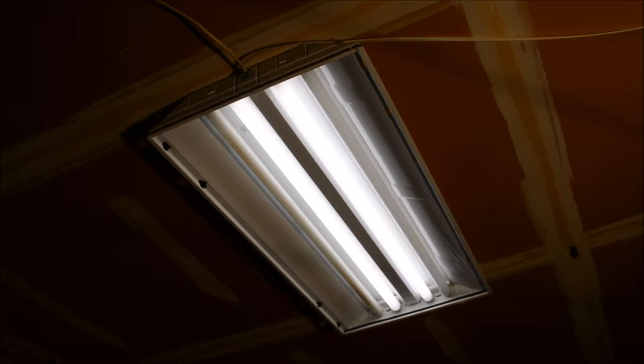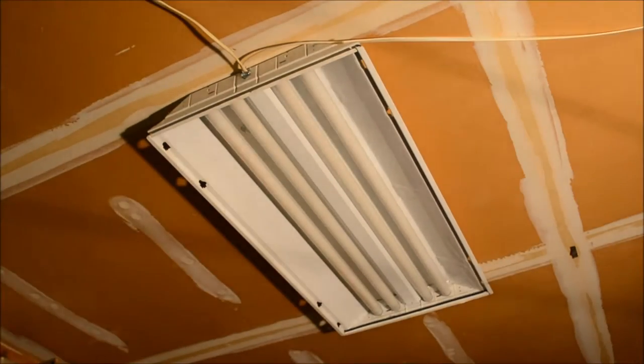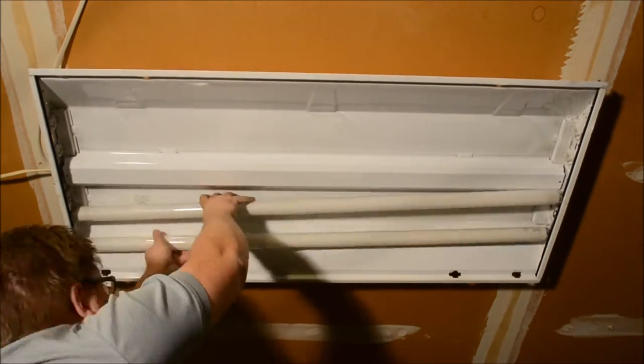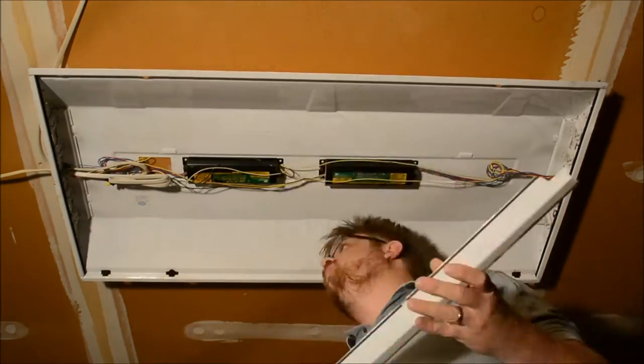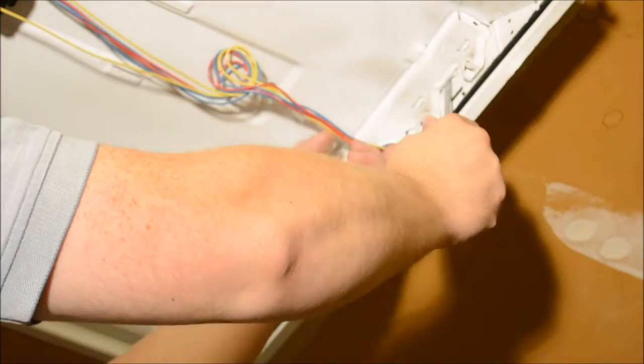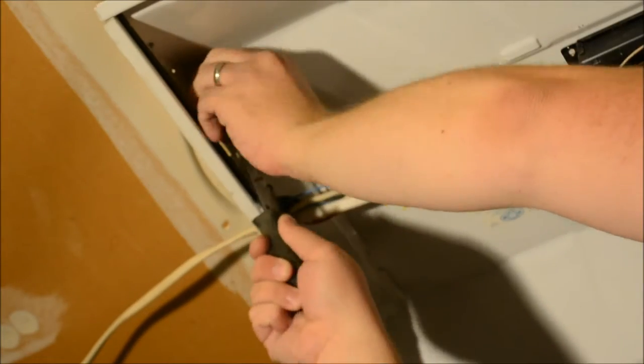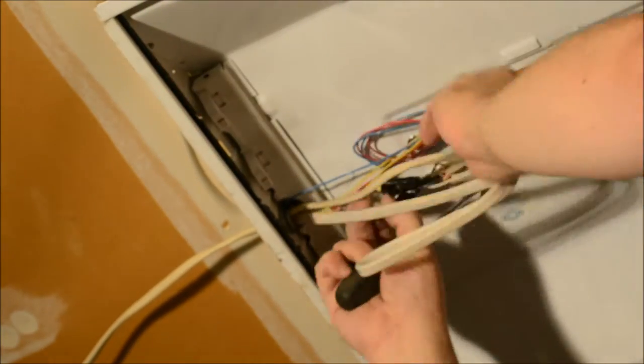First step, disconnect it from power. Keep track of which pair is which because the one with the ballast is more likely bad. Use a screwdriver, flat bladed, to break those pieces loose and then the tombstones should actually start falling out right away.